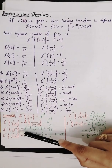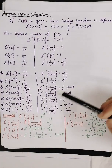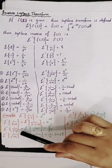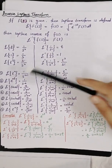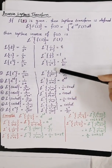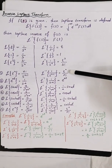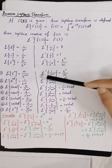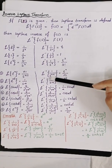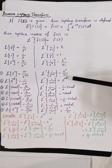Now calculate Laplace inverse of 1 over s^6. We know the formula: Laplace inverse of 1 over s^(n+1) equals t^n over n factorial. Here s^6 means n+1 equals 6, so n equals 5. Therefore, Laplace inverse of 1 over s^6 equals t^5 over 5 factorial.